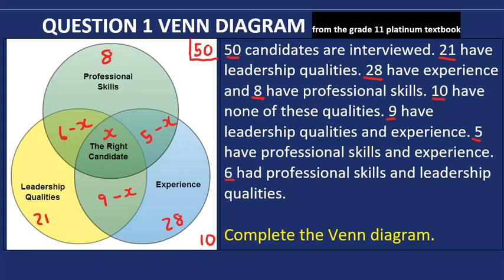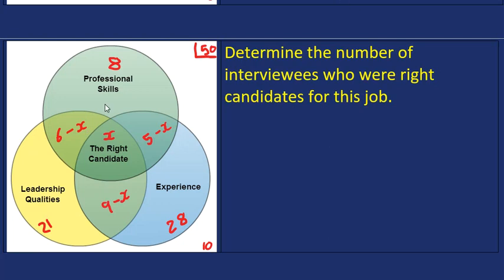In the second part of the question we have to determine the number of interviewees who were the right candidates for the job — meaning we need to solve for X, since the intersection was X because we didn't know the right candidates. To solve for X, we add all the given information and equate it to the total of 50 candidates.